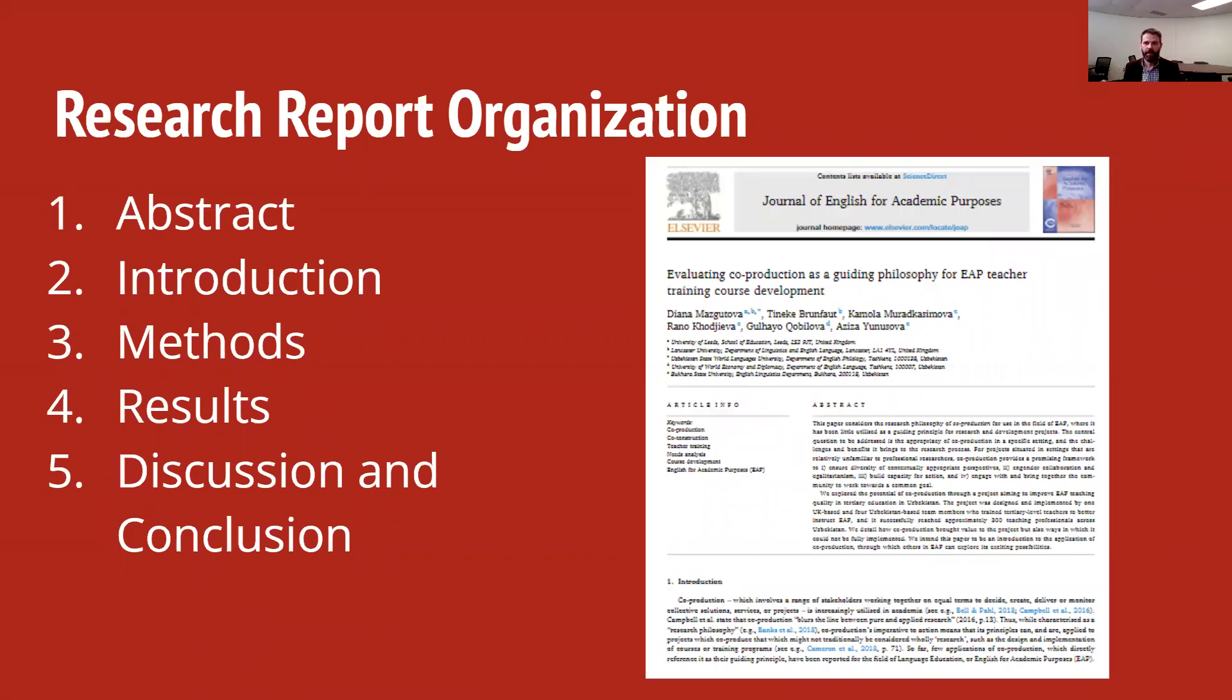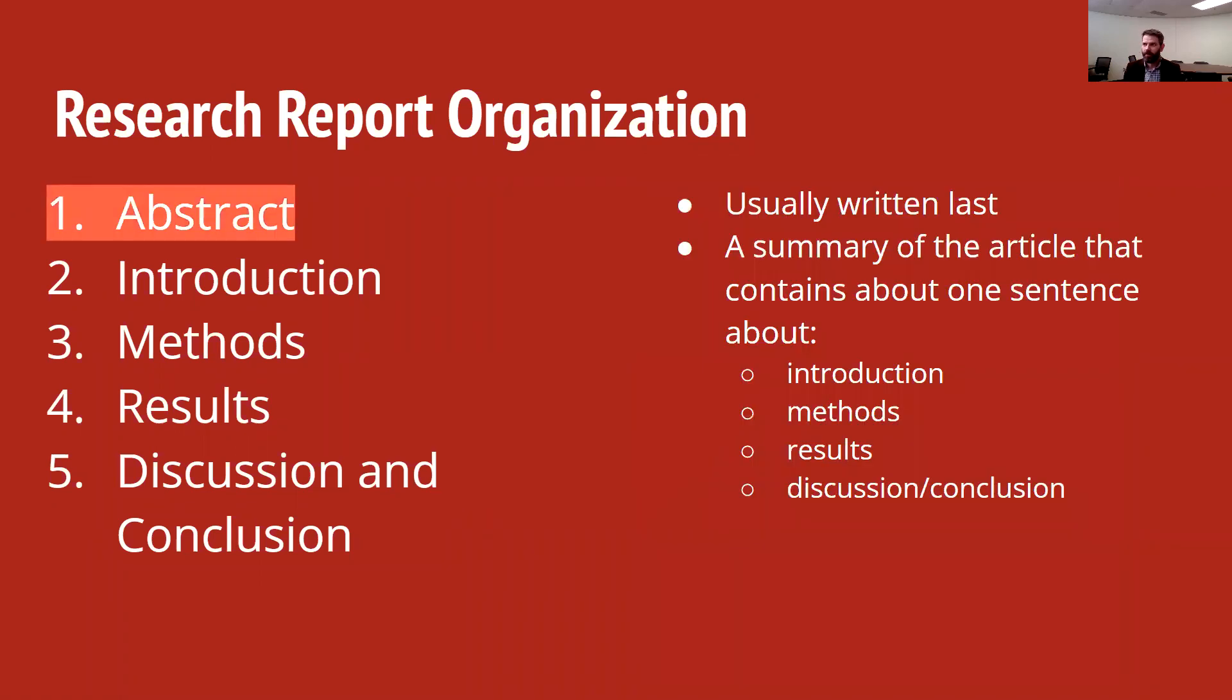As a reminder, these are the main sections that we'll include in our research report. These are the most common sections that appear in science and social science research. So we're learning not only how to better read these types of sources, but also how to write them. Now the abstract section is something that we will write at the end. It's a summary of our whole article. Don't worry about your abstract when you're doing your first draft.